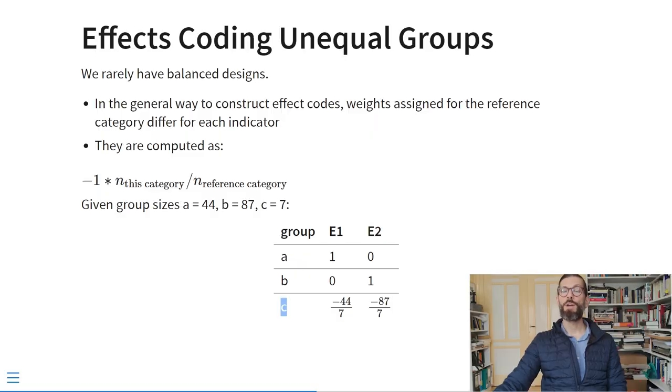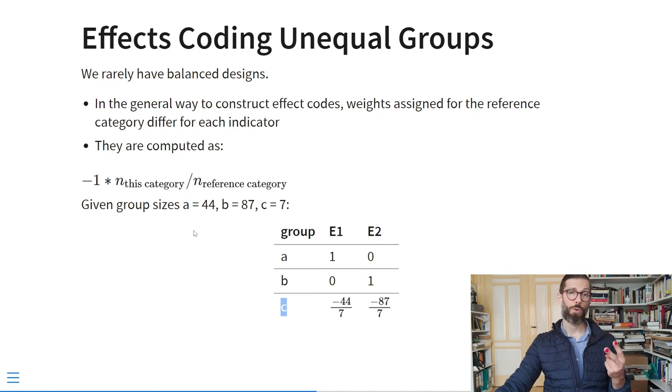In real life research we rarely have balanced designs. We can use a more general method — weighted effects coding — that accounts for differences in sample size. We assign different weights to the reference category for every indicator. For example, with three groups of sizes 44, 87, and 7, the weight for the reference category (group C) on indicator E1 is minus 44 divided by 7, and on E2 it is minus 87 divided by 7.